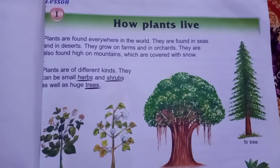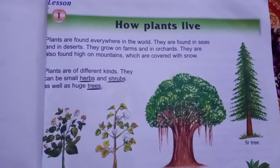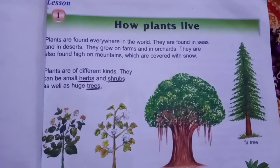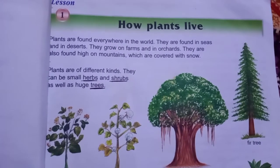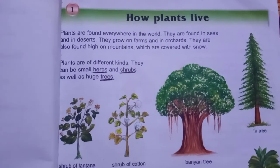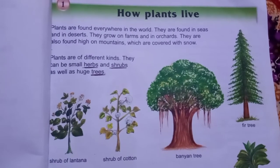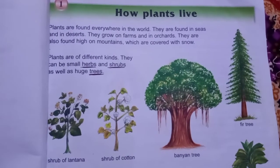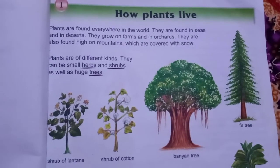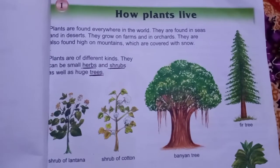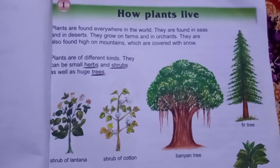یہ اپنی غذا خود بناتے ہیں، سانس لیتے ہیں اور grow کرتے ہیں۔ Remember, plants need sunlight and water to grow. We see different types of plants around us. بہت سارے plants بہت strong اور بھرے دکھائی دیتے ہیں، اور کچھ plants چھوٹے اور weak ہوتے ہیں۔ Let's understand about the types of plants.